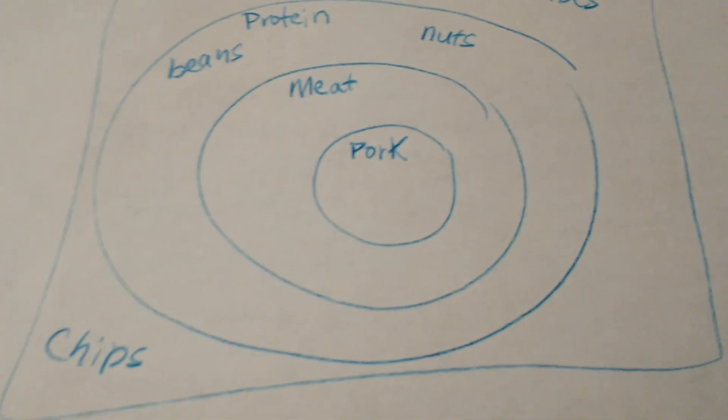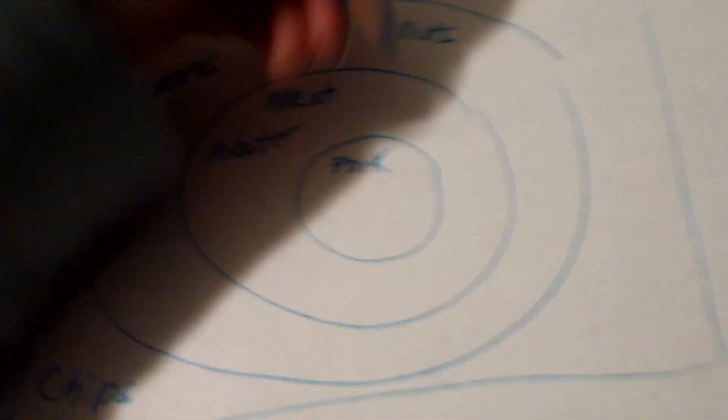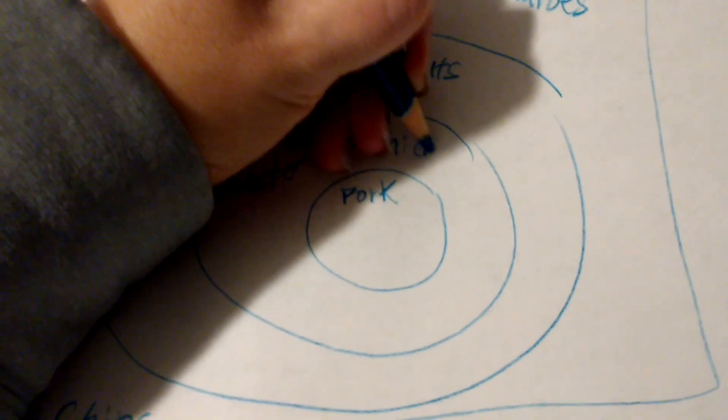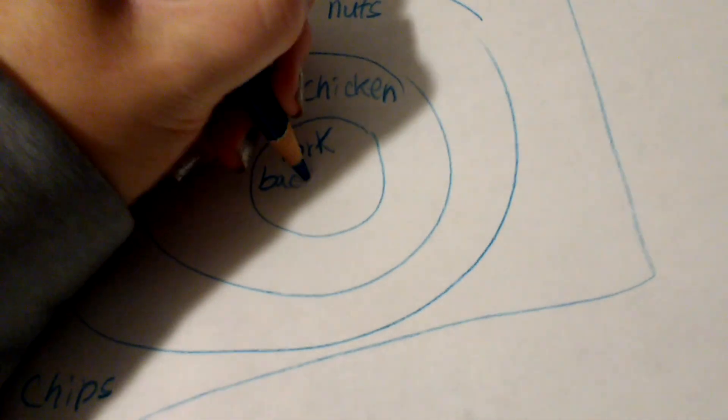And so then meat, something that would go here would be like lobster or chicken, bacon. But then in pork, things like bacon and pork roast.